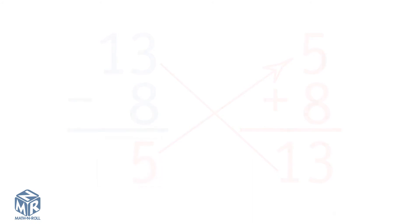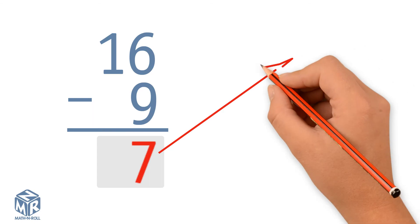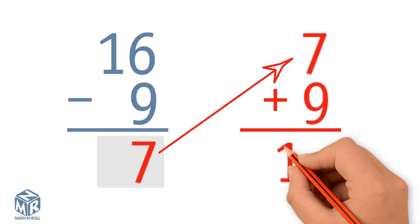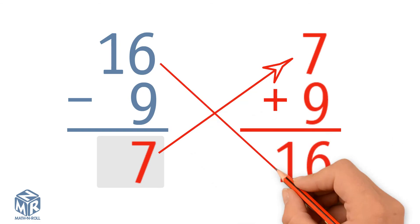Let's try another example. 16 minus 9 equals 7. 16 is the whole, and 9 and 7 are parts. To check our subtraction, we add the parts. 7 plus 9 equals 16. 16 equals 16, so our subtraction was correct.